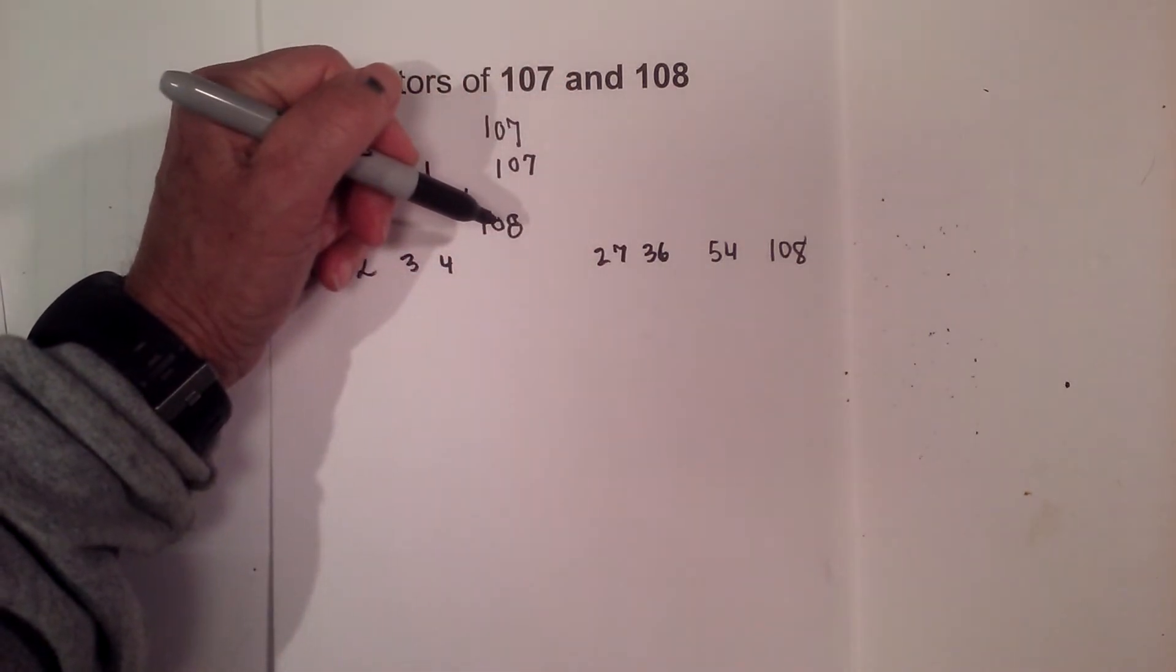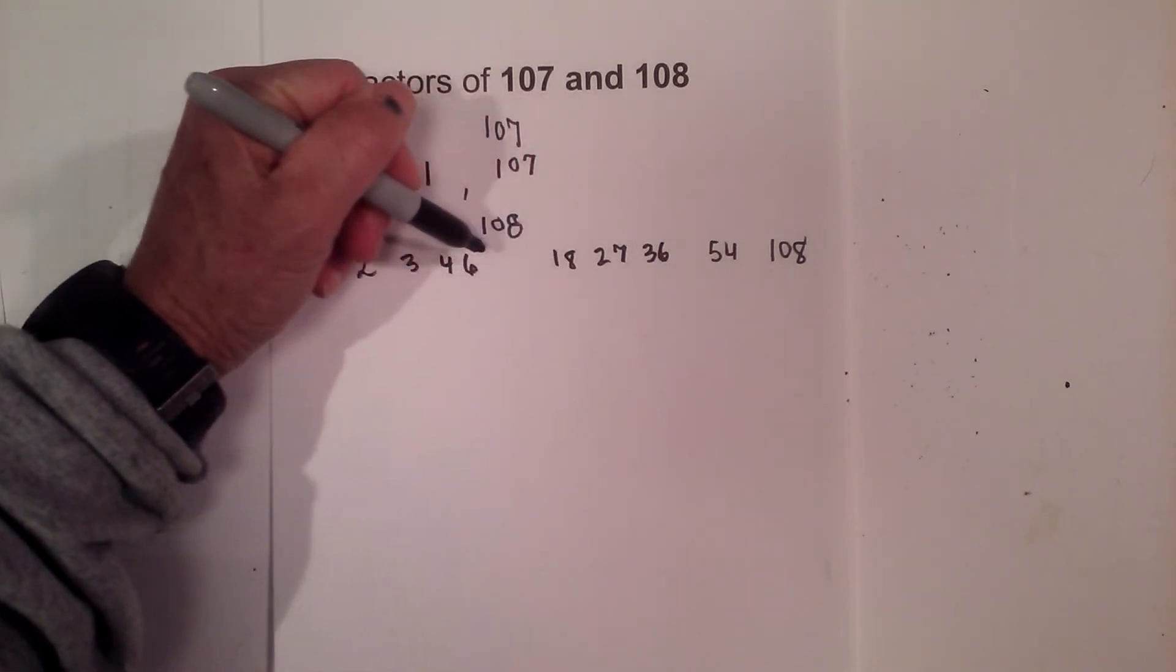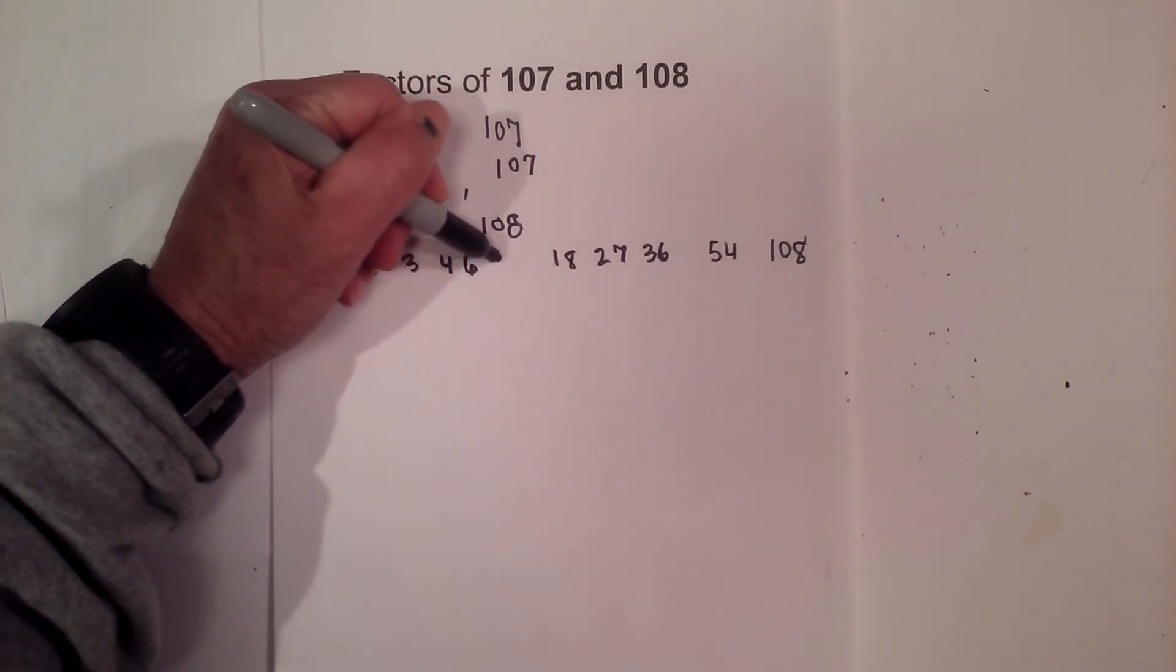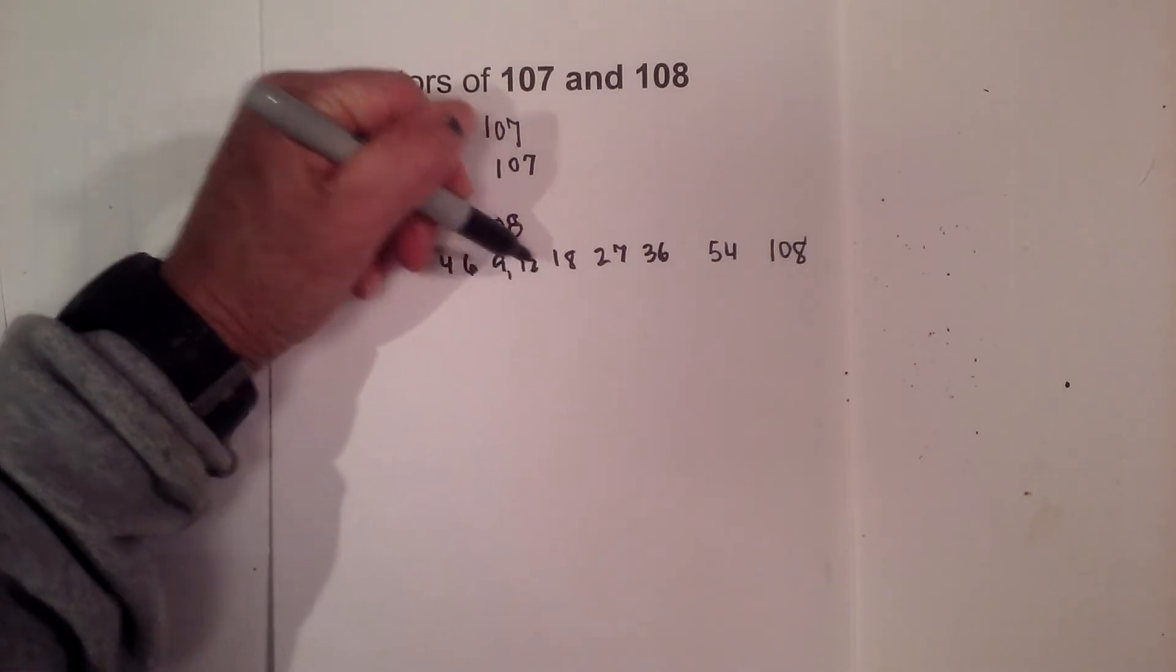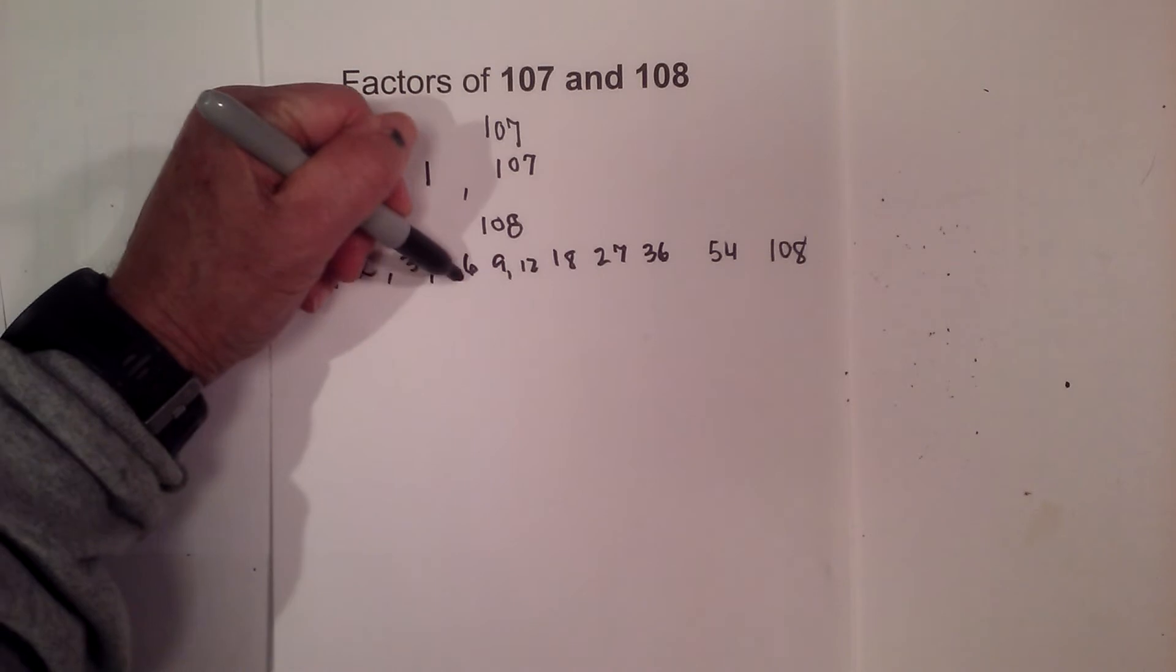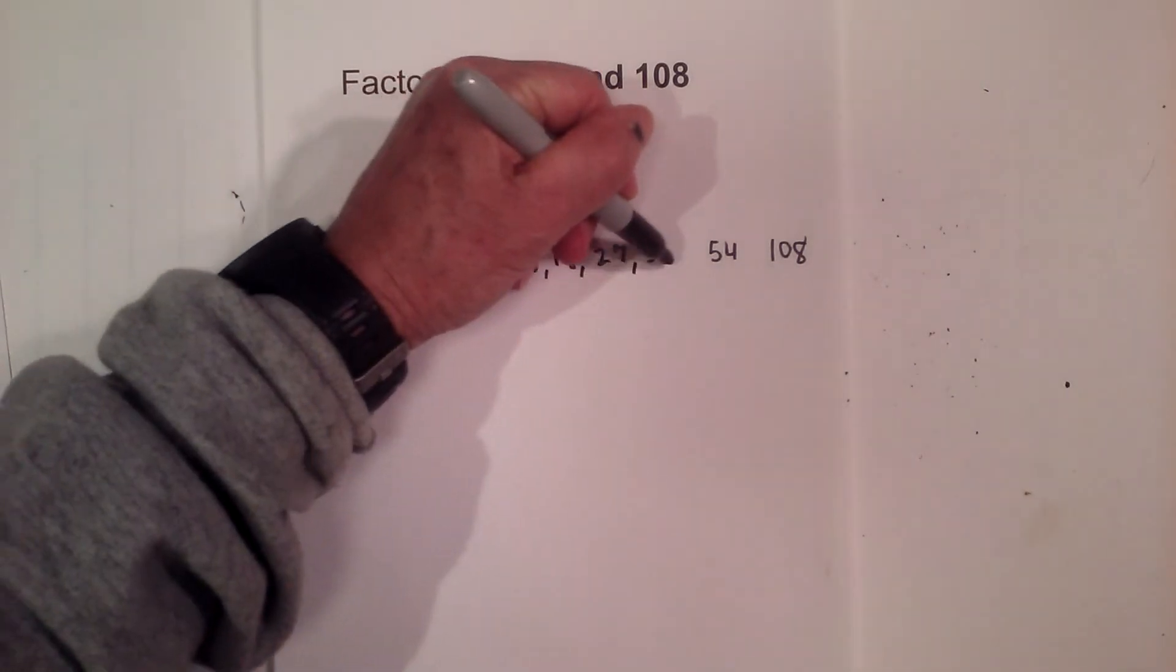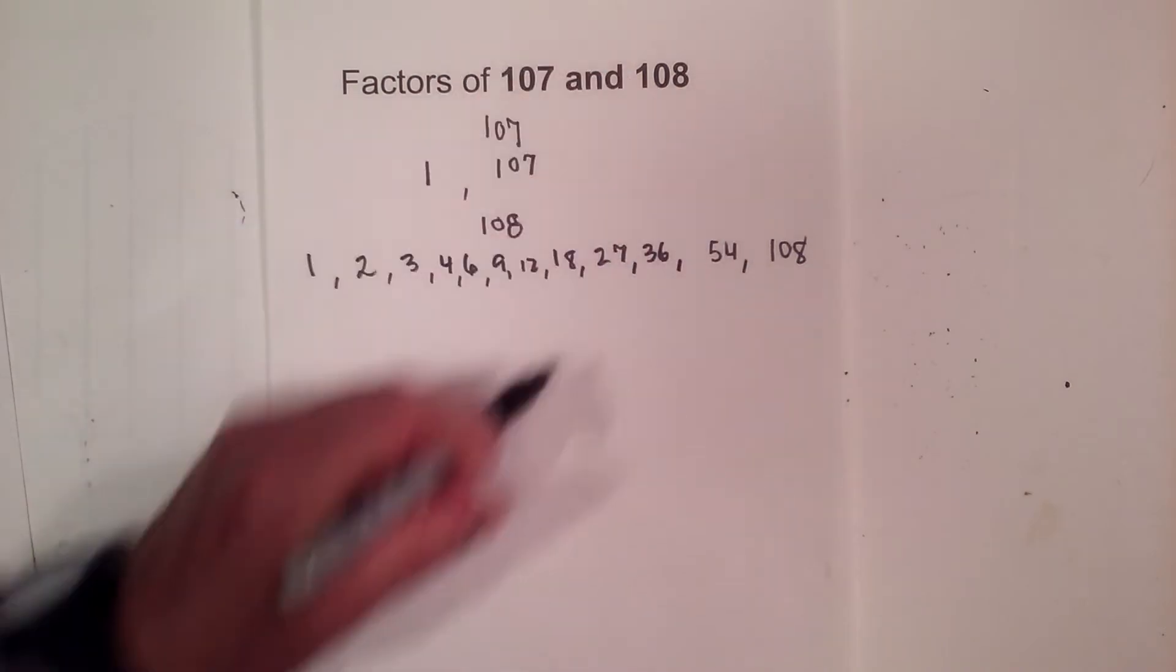And let's try 6 and 18. And then finally 9 and 12. So the factors of 108 are 1, 2, 3, 4, 6, 9, 12, 18, 27, 36, and 54.